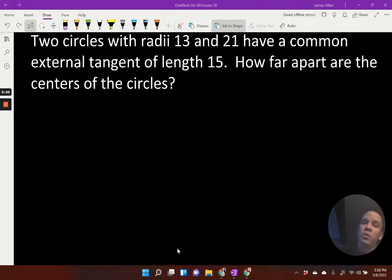We got two circles with radii 13 and 21. They have a common external tangent that's a length of 15. How far apart are the centers of the circles?